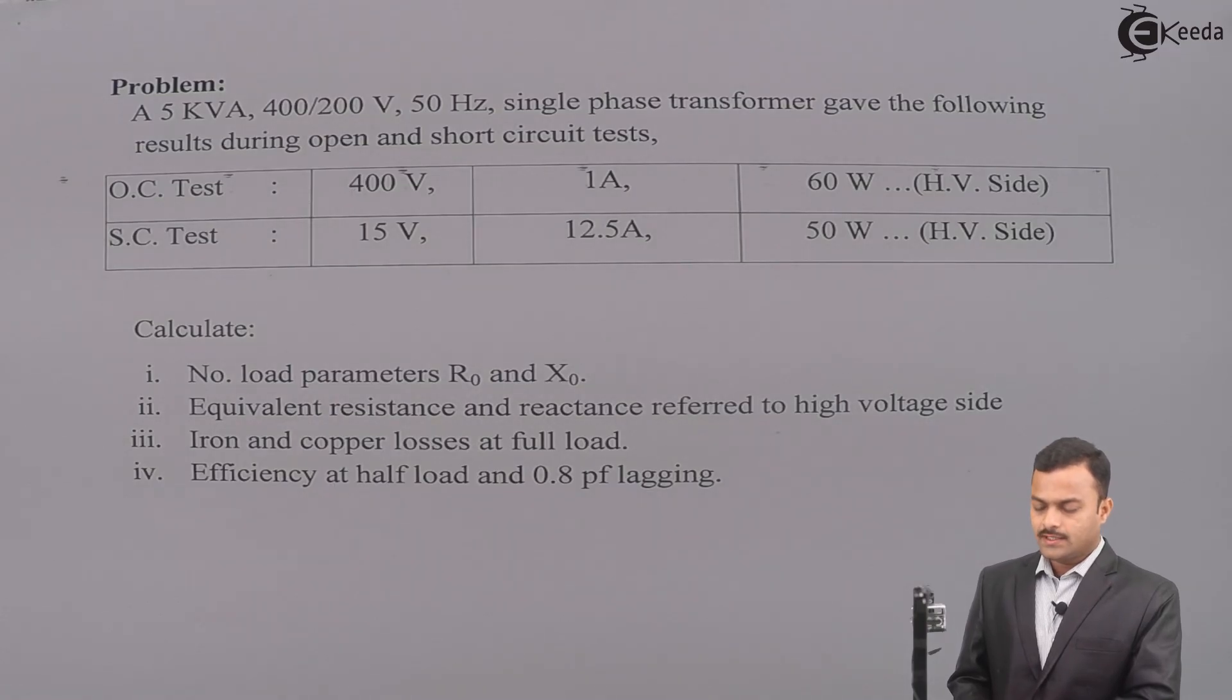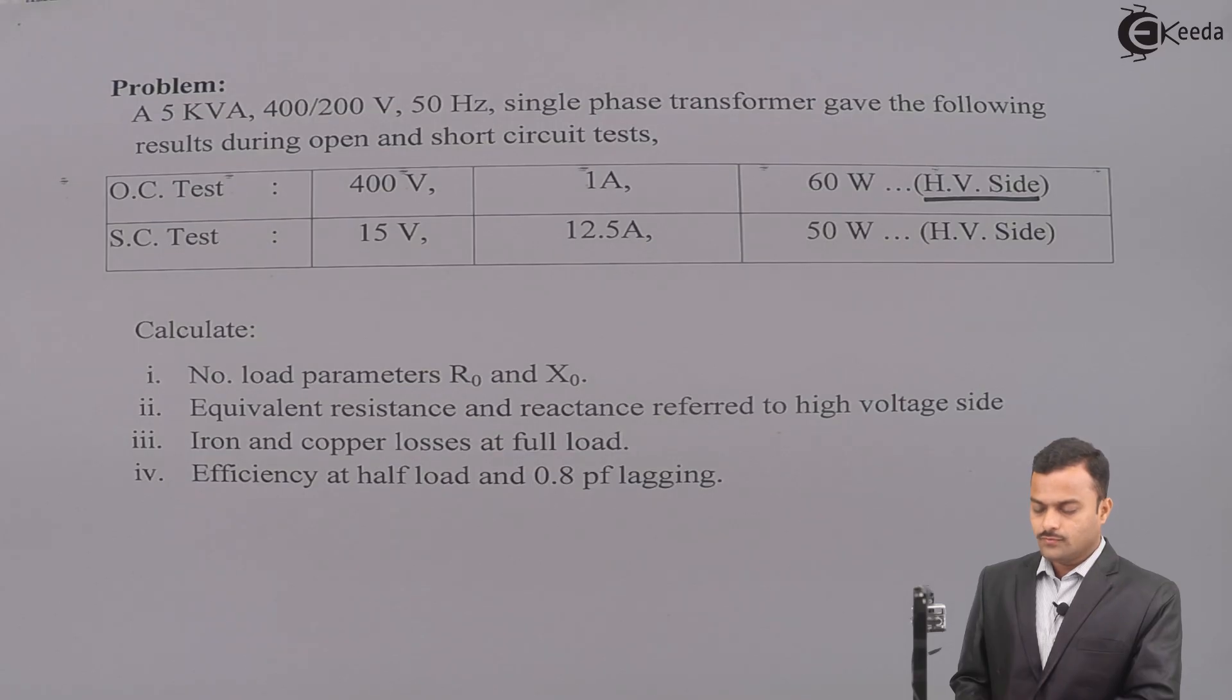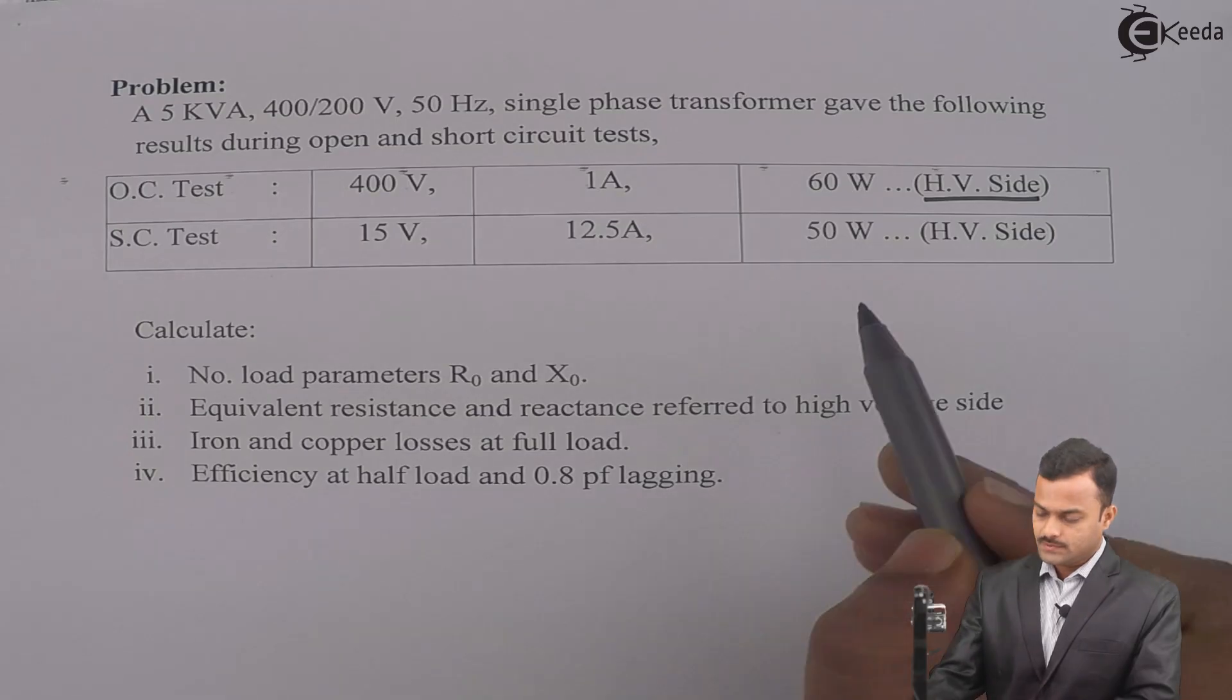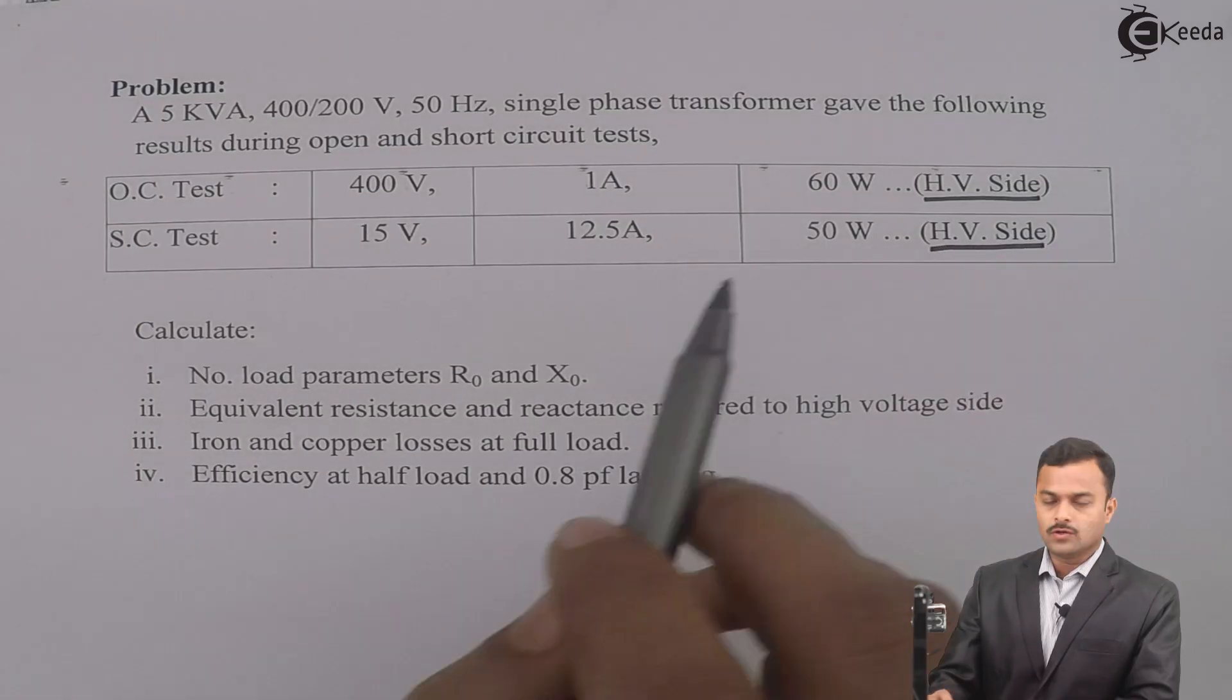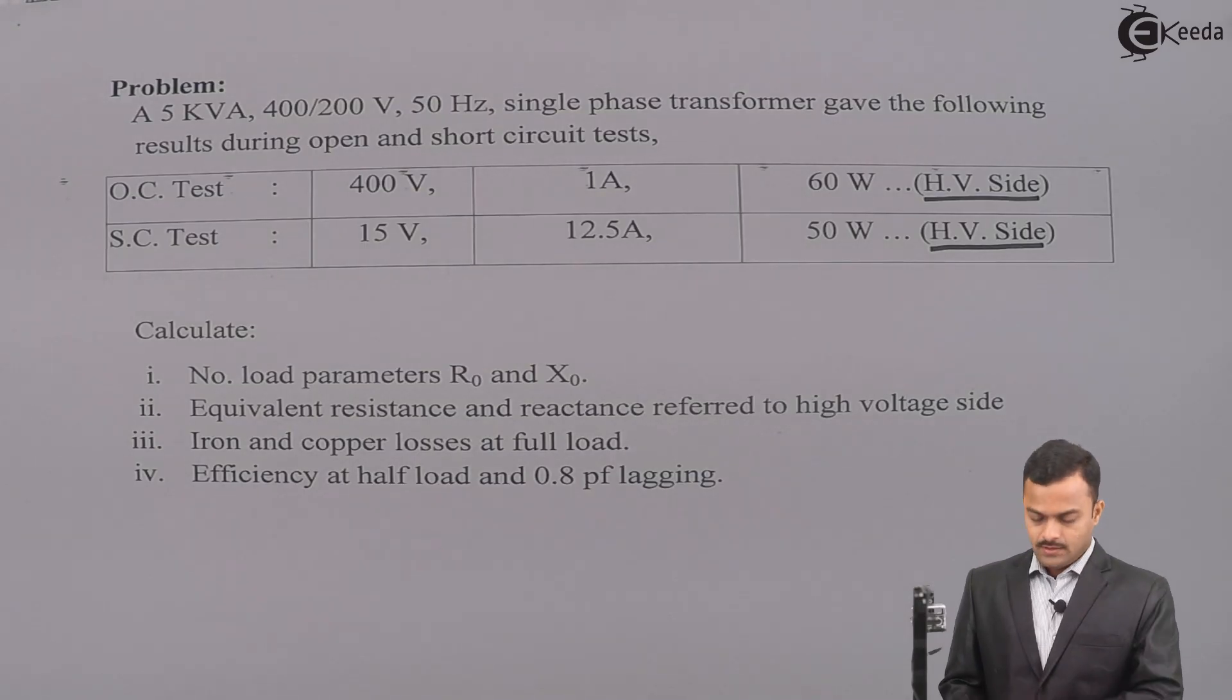Here is the problem. A 5kVA 400/200 volt 50 hertz single phase transformer gave the following results during open and short circuit test. OC test: 400 volt, 1 ampere, 60 watt, performed on HV side. SC test: 15 volt, 12.5 ampere, 50 watt. The test is performed again on HV side only. We have to calculate no load parameters R0 and X0, equivalent resistance and reactance referred to high voltage side, iron and copper losses at full load, and efficiency at half load and 0.8 power factor lagging. So, let us start.